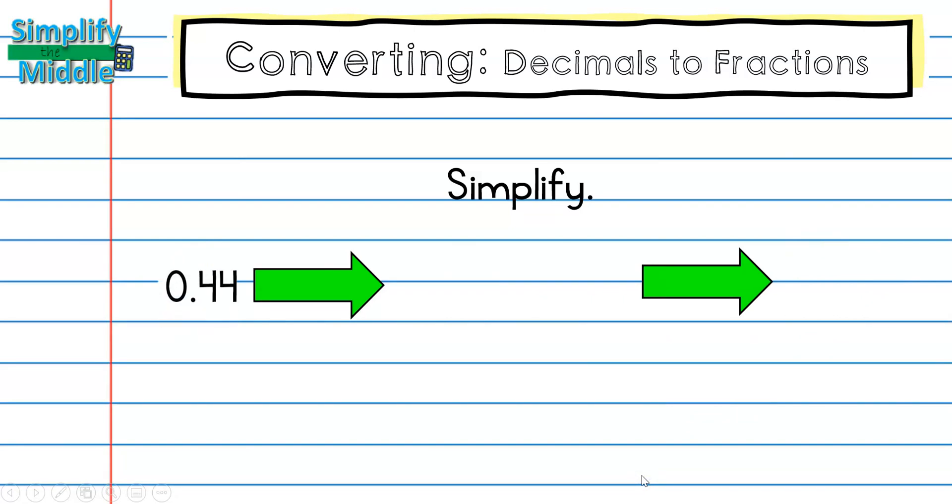Here is 0.44. Why don't you give this one a try? So if you read it from the place value, you would have read it as 44 hundredths, 44 over 100. I see very clearly that they both have a 4 in common as the greatest common factor. So I'll divide by 4. And my fraction is going to be 11 25ths.